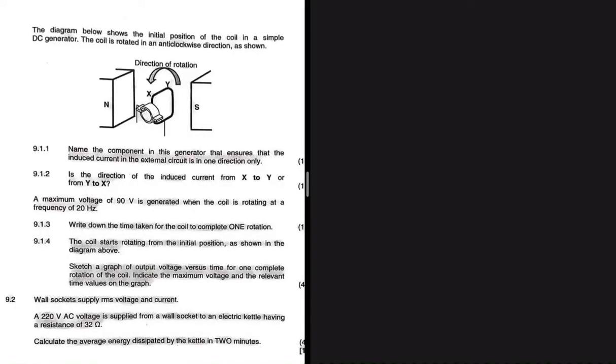You will have to excuse the way my question paper looks here, but it is what it is. So the first question 9.1.1 is saying, let's name the component in this generator that ensures that the induced current in the external circuit is in one direction only.